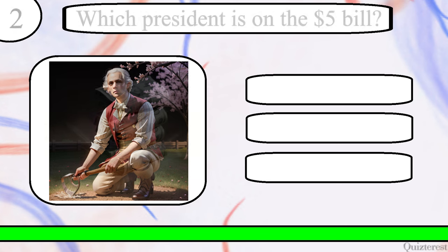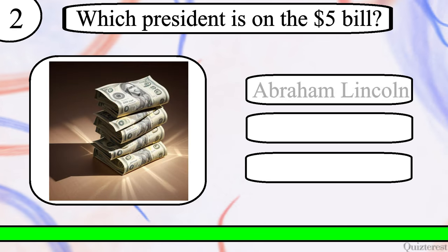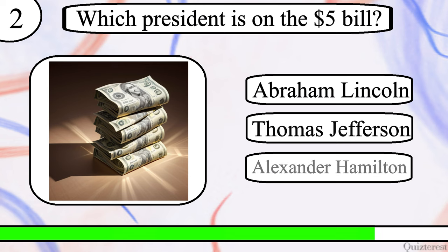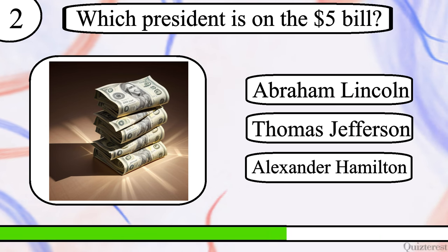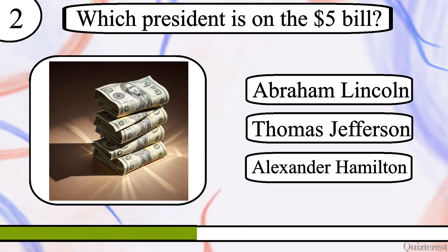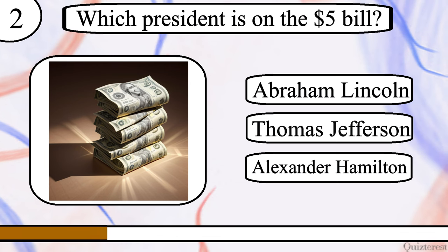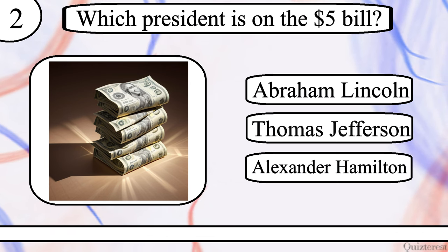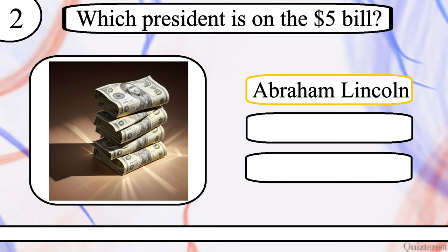Question 2. Which President is on the five dollar bill? Abraham Lincoln, Thomas Jefferson or Alexander Hamilton? The correct answer is Abraham Lincoln.